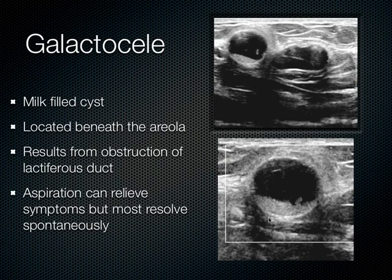When galactoceles are new and composed mainly of milk without any separation, they appear more as solid masses with increased posterior acoustic enhancement. As galactoceles age, the fat, water, and protein content separates, and they become more cystic in appearance.